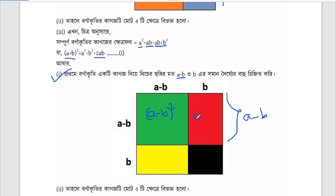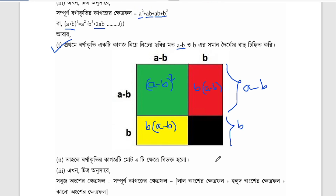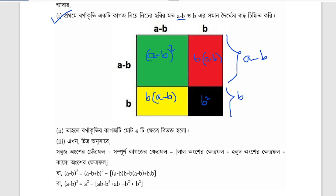b into (a minus b), and all of the catchable is b into (a minus b), and b into (a minus b) twice.